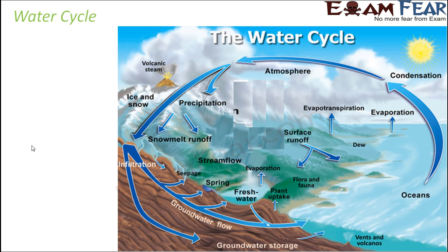Let us start with the water cycle. The water cycle tells us how the amount of water is cycled between various components of the biosphere. Consider rain: it happens from the atmosphere, where clouds are present. Clouds are nothing but droplets of water in condensed form. When these clouds fall to the ground, that is rain. When rain happens, it seems as if the water content in the atmosphere came down from the atmosphere to the earth.